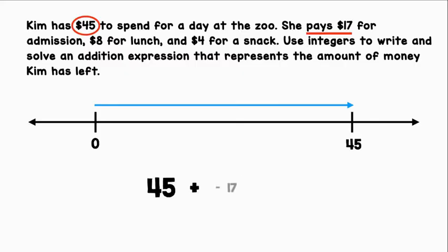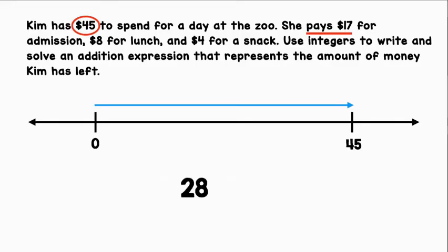Then she pays $17 for admission. So, let's represent that with plus negative 17. First, let's find the difference of the absolute values. 45 minus 17 equals 28. 45 has the larger absolute value, and it was positive. So, 28 is going to remain positive. She has $28 after admission.